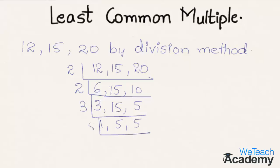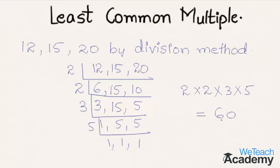Dividing again by 5, we get 1, 1, and 1. Multiplying all the factors: 2 × 2 × 3 × 5 = 60. Hence the least common multiple of 12, 15, and 20 is 60.